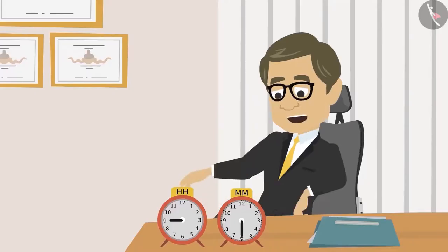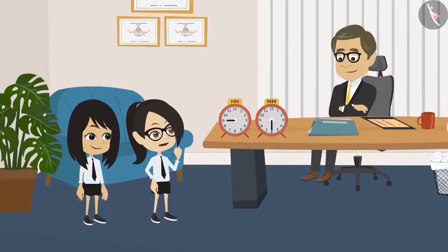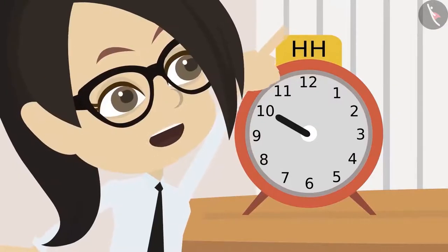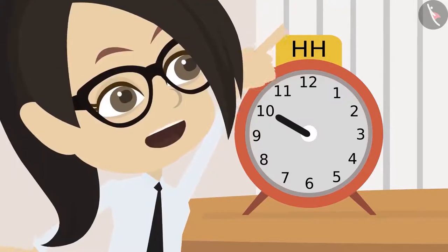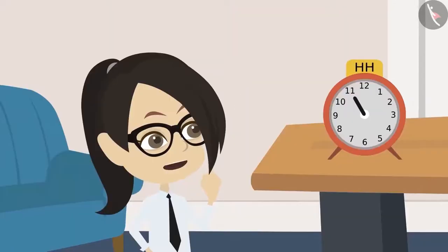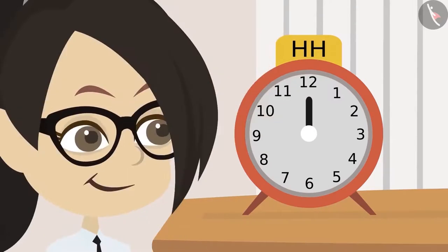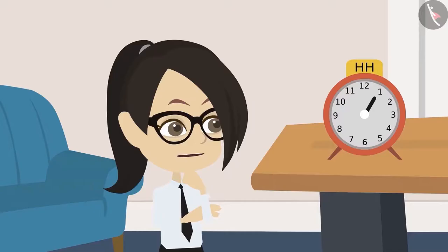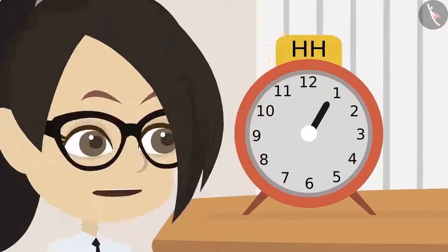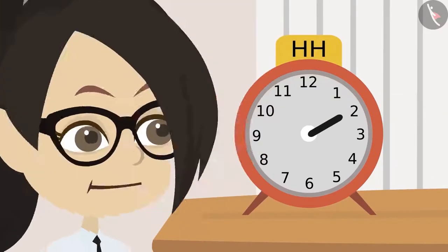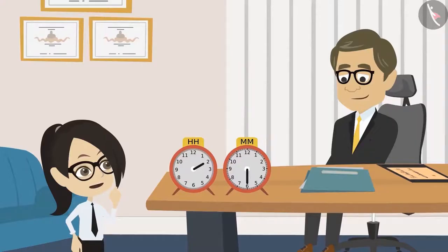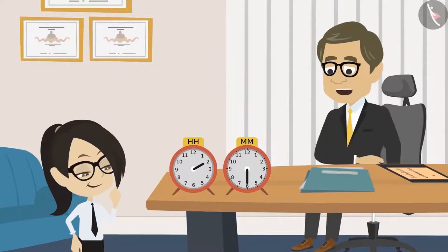Now, with the help of this button, move the hour hand to the place where it would be when it is two o'clock. Okay, Sir, I will try. The hand is at ten right now. Now it's at eleven, meaning it's eleven o'clock. Now it's twelve o'clock. Now it's on one, that is one o'clock. Now it has come to two. Sir, it will be on two when it is two o'clock. Well done, Vandana.